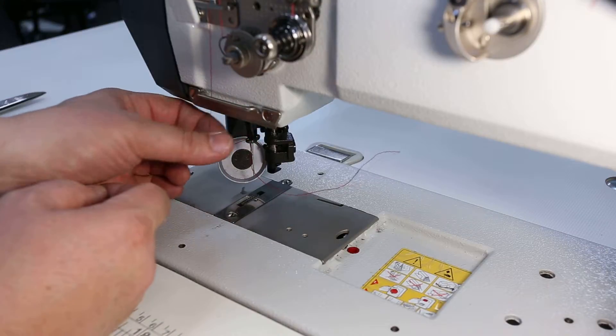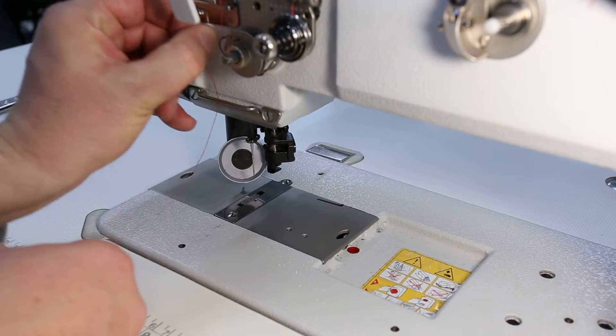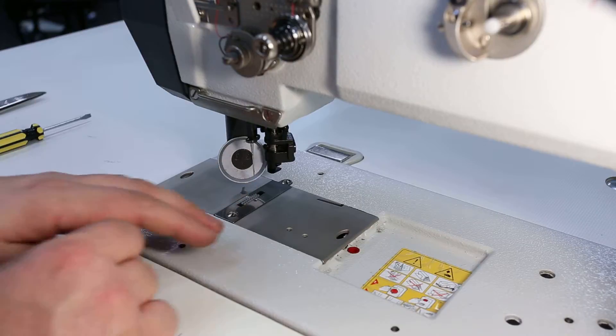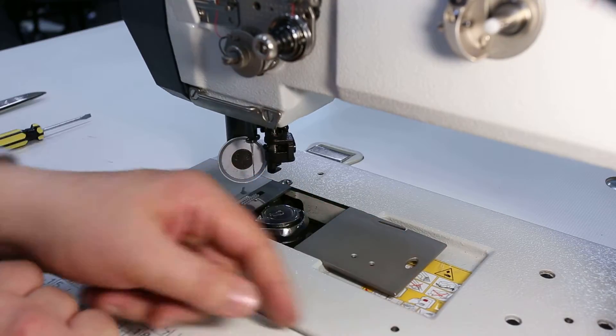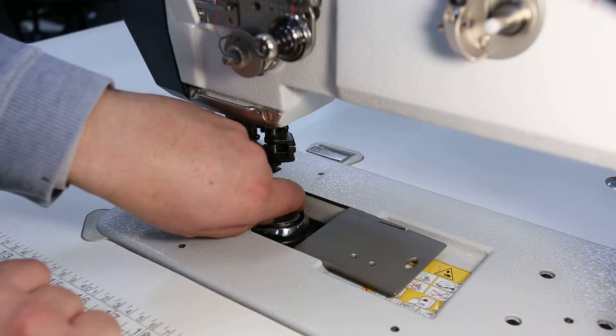Remove the thread from the needle and from the needle bar, and if you want, take it out of the guide and lay it over the top of the machine so it doesn't get caught. Open that plate, then remove the bobbin and the bobbin case.